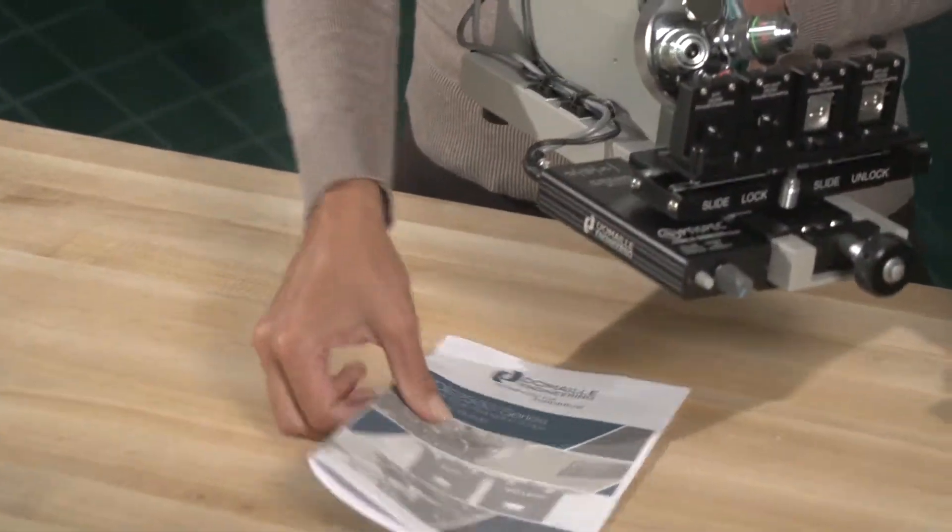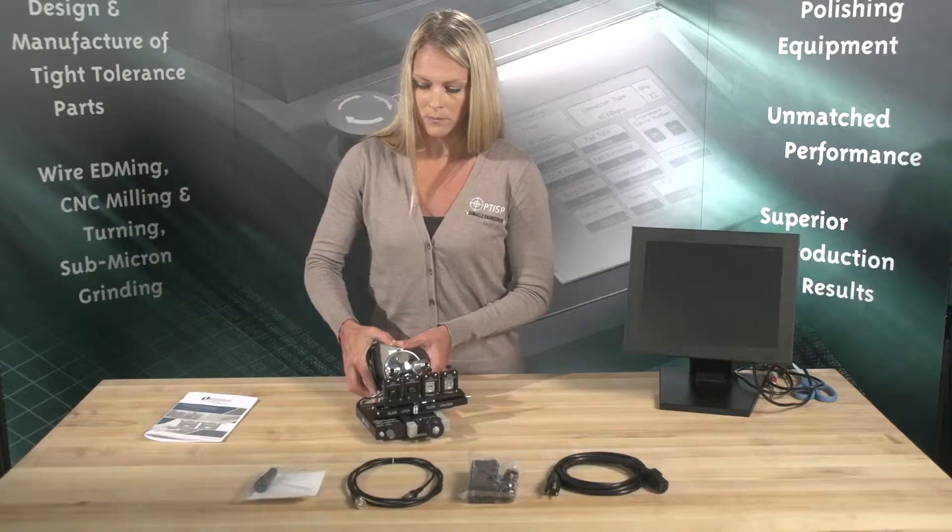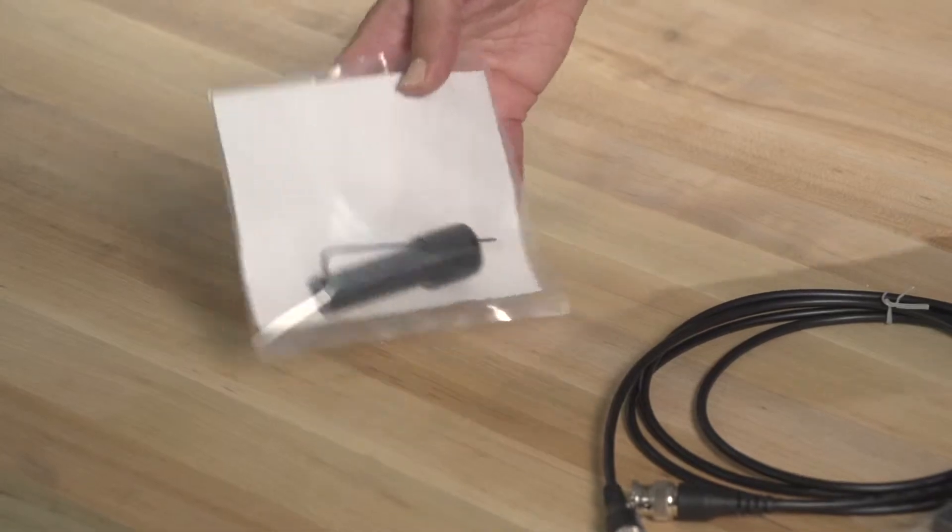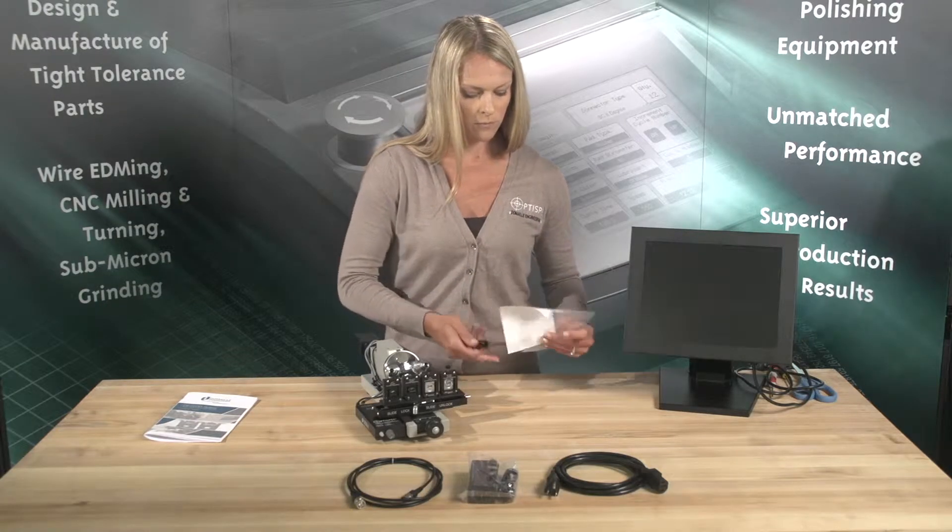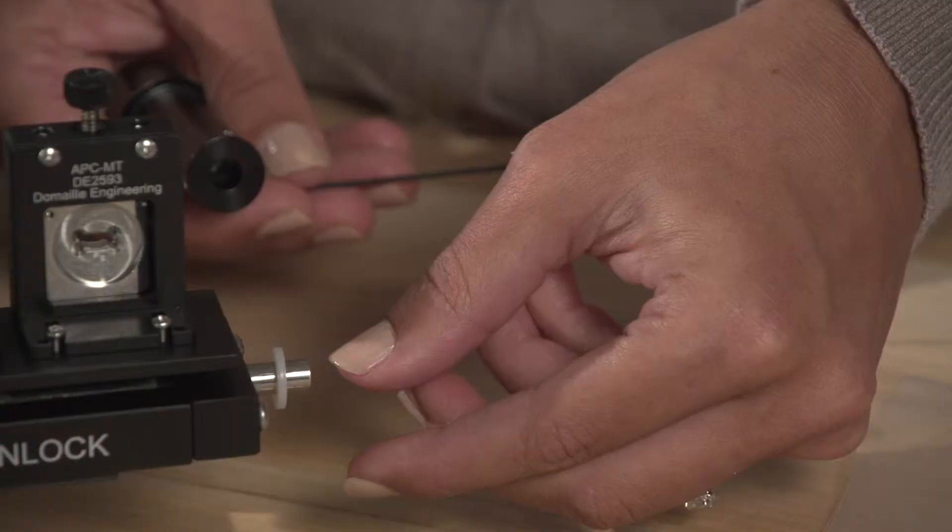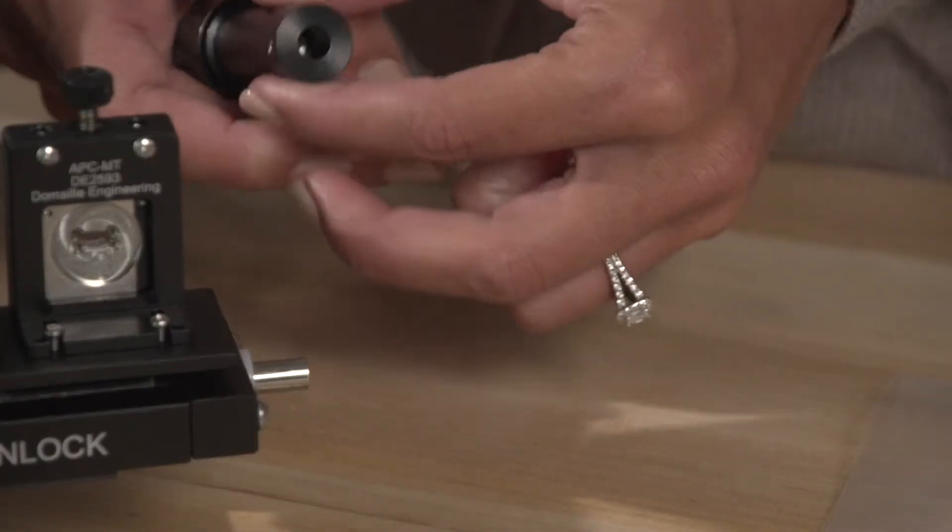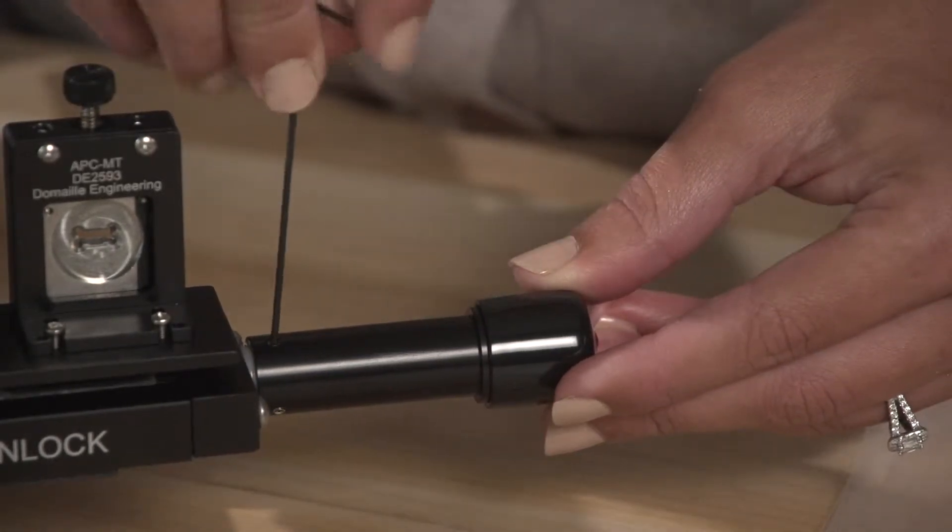To prevent damage during shipping, the adjustment knob for the linear slide has been removed. To install the knob, follow these steps: Slide washer on. Slide knob over shaft. Tighten the two set screws with the hex wrench provided.